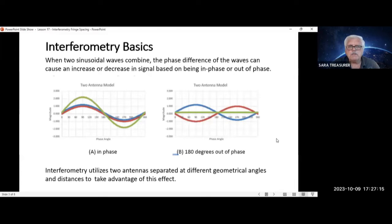Some basics. When two sinusoidal waves combine, the phase difference of the waves can cause an increase or decrease in signal based on being in or out of phase. You see diagram A, you see the two signals, in the red and the blue, are in phase.